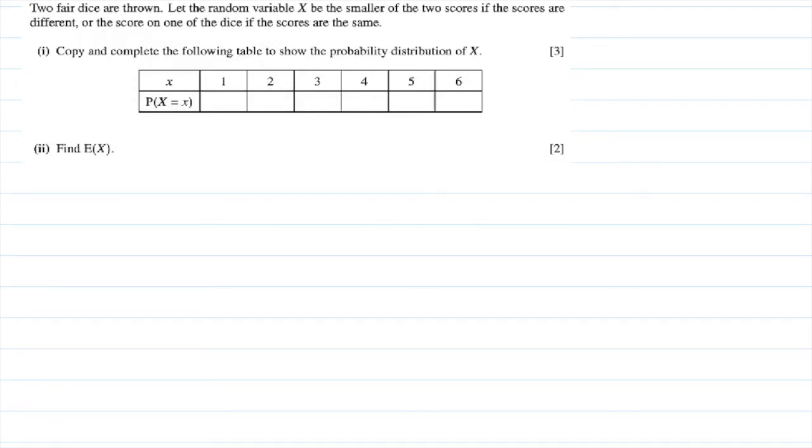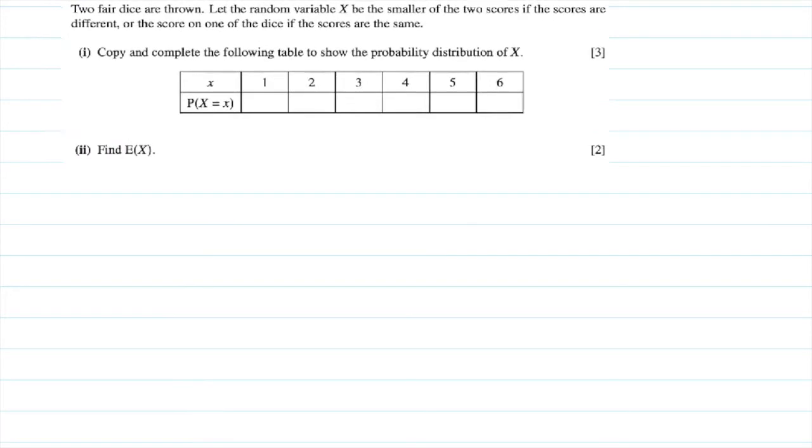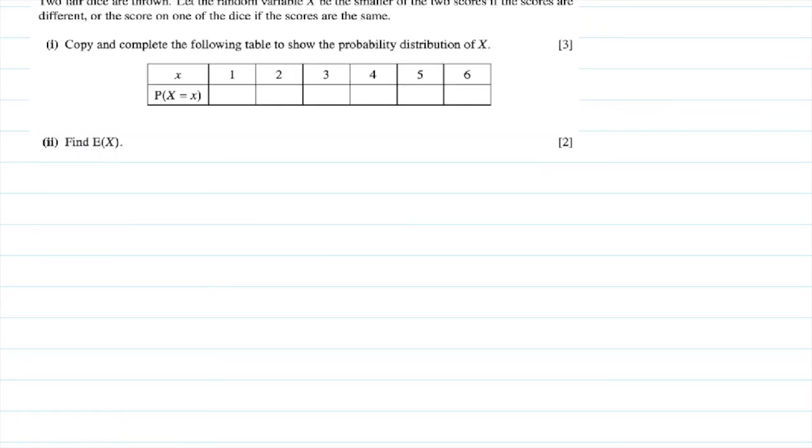The two fair dice are thrown. Let the random variable X be the smaller of the two scores if the scores are different, or the score on one of the dice if the scores are the same.